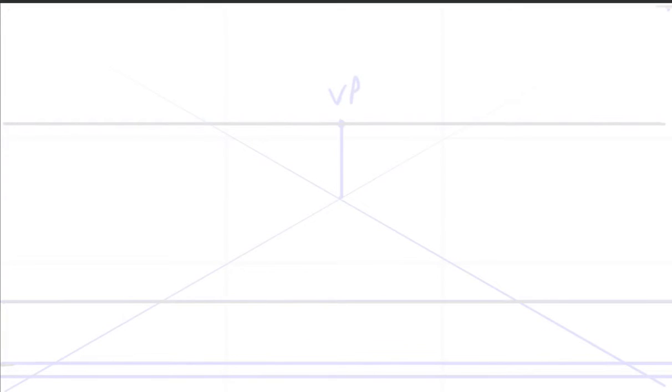So the first thing you always need with perspective is a vanishing point. And I want to have mine pretty much in the middle of the page, but on the horizon line, as one does. So I've chosen to put my horizon line here on the top third line of the page.